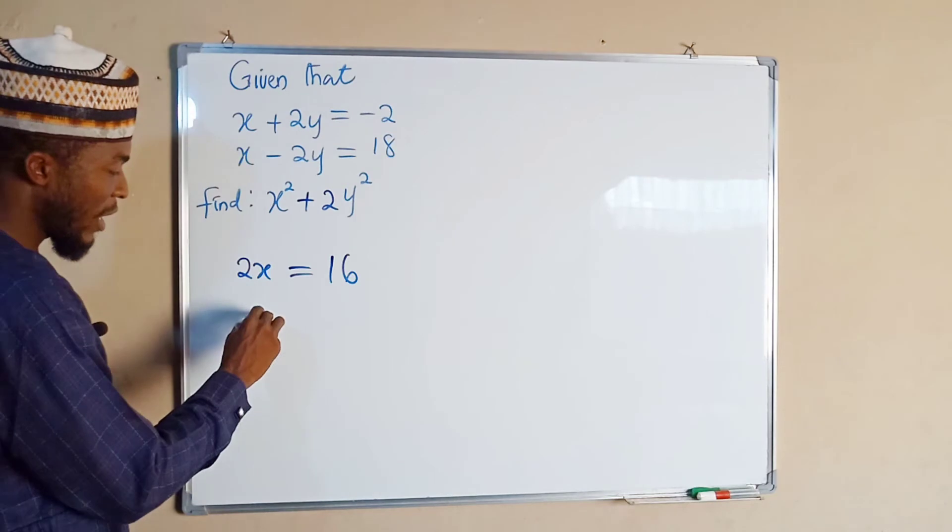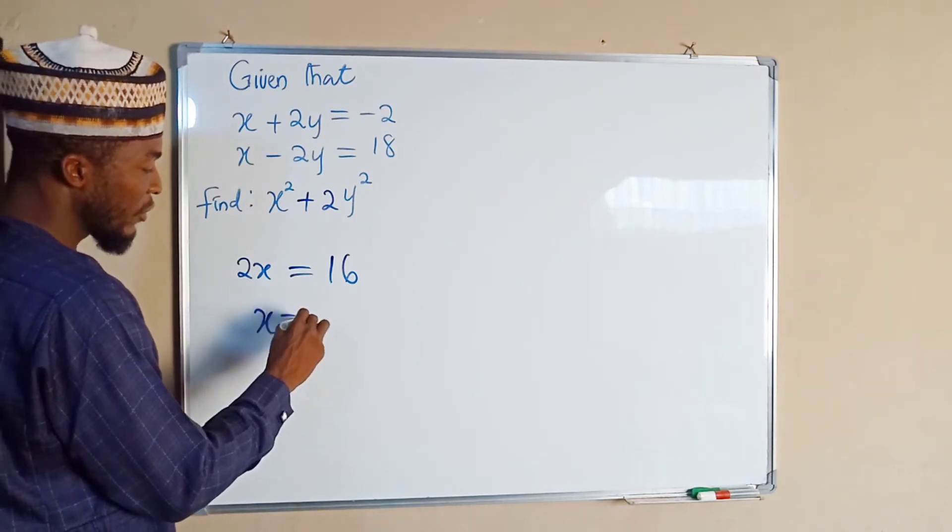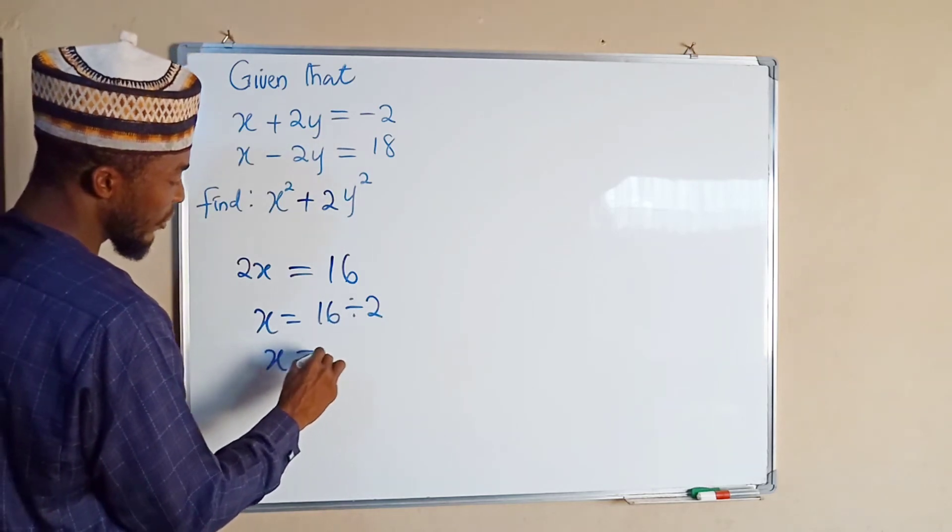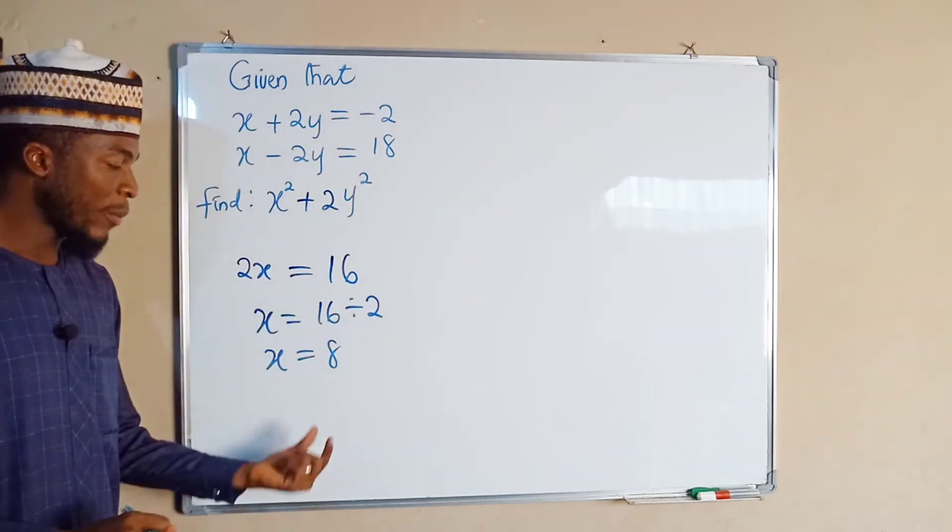By dividing both sides, we have x = 16 ÷ 2, and x now equals 8. Having obtained the value of x, we want to substitute the value of x = 8 in either equation 1 or equation 2.